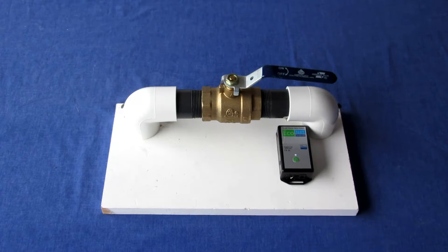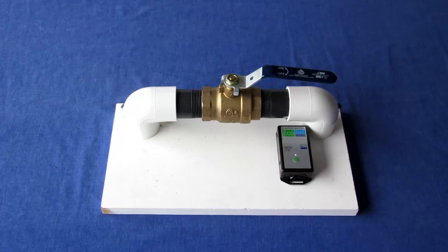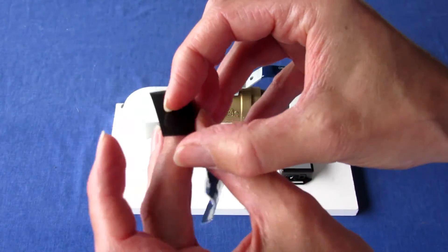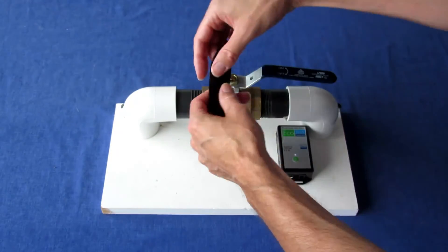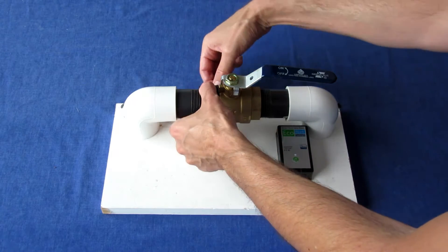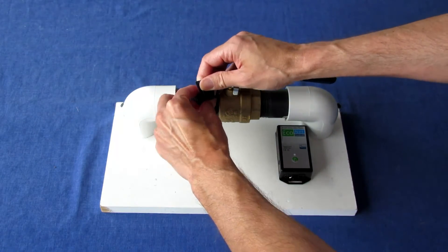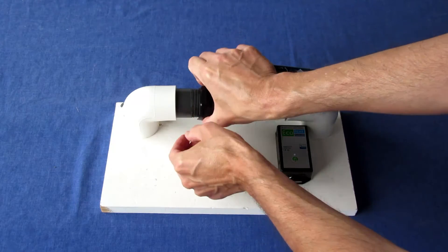For extra gripping force, wrap your existing water valve with the included silicone fusion tape before mounting the Bulldog. Peel the backing off before wrapping the silicone tape around your water valve. Wrap the tape around the opposite side of the valve handle. Stretch the tape as you wrap it to ensure a snug fit.